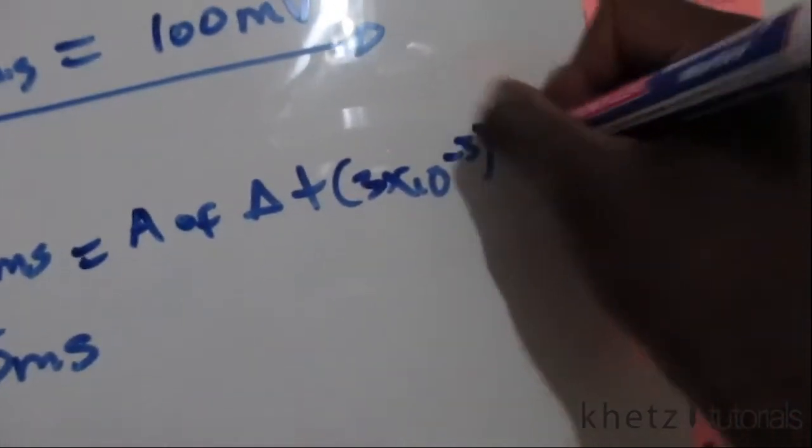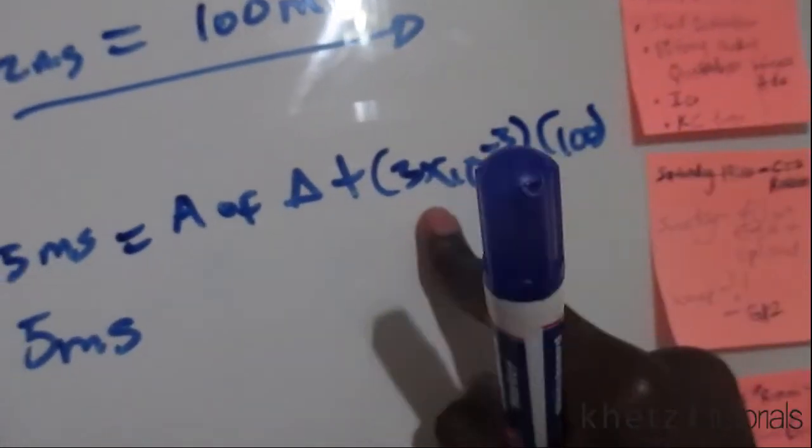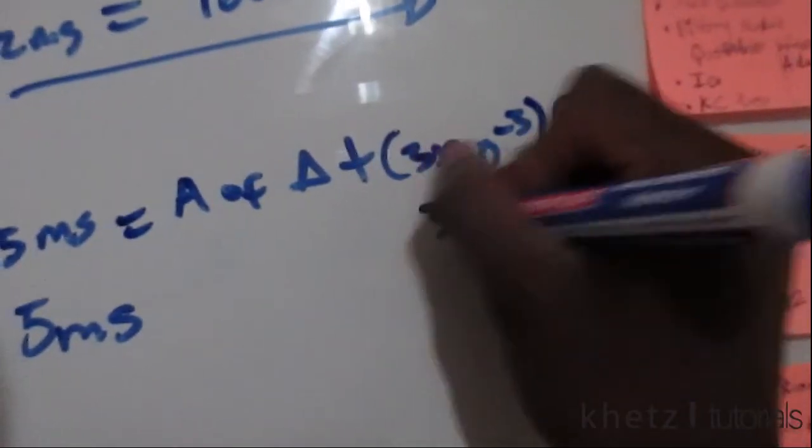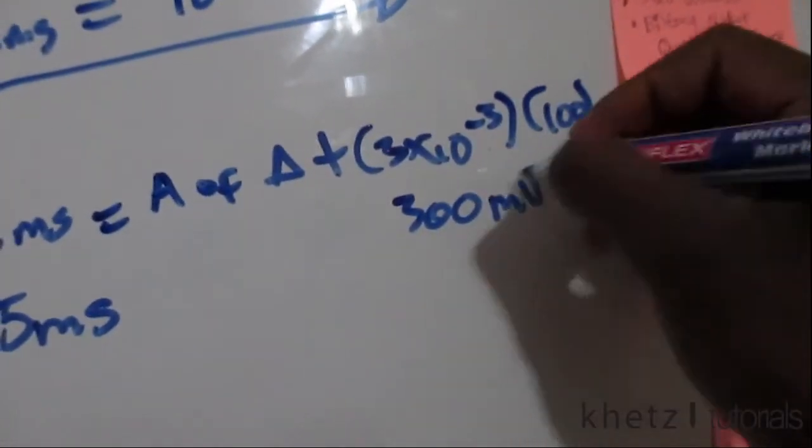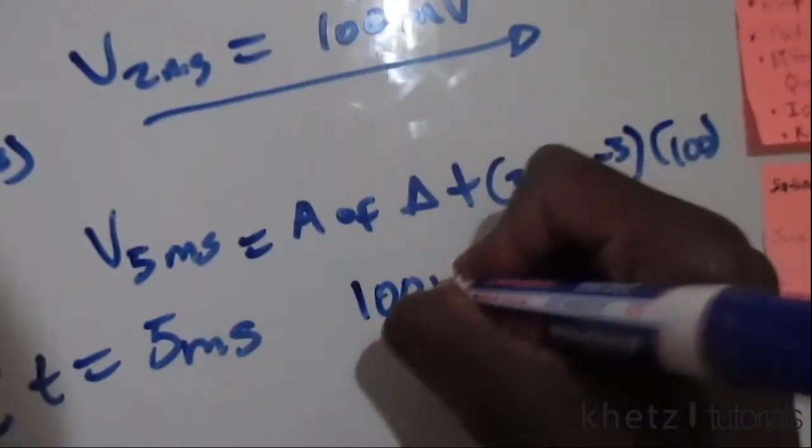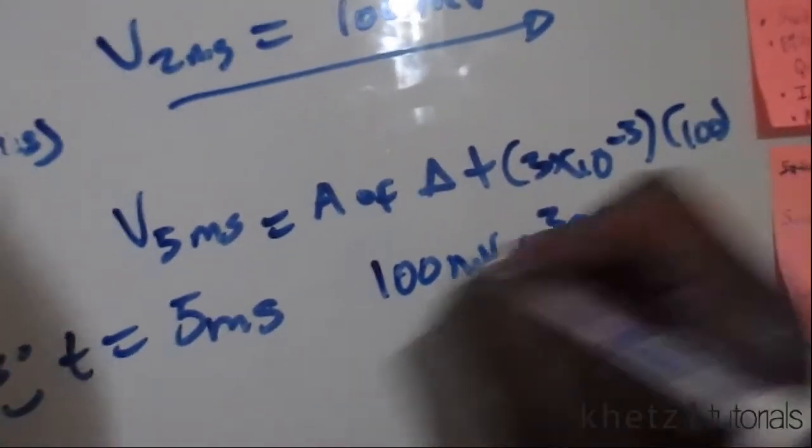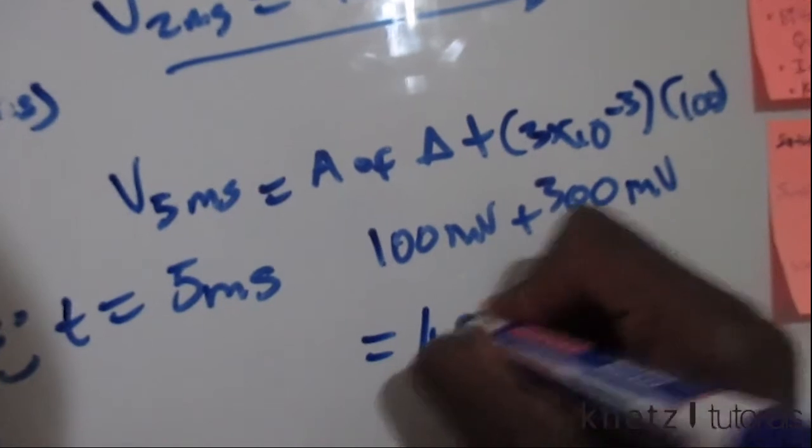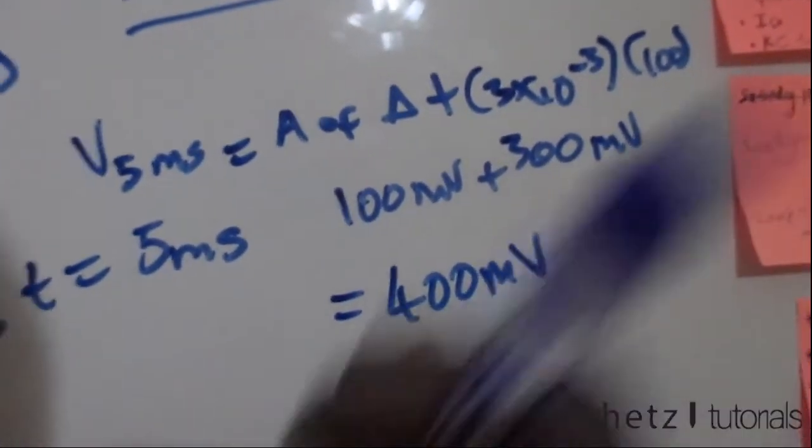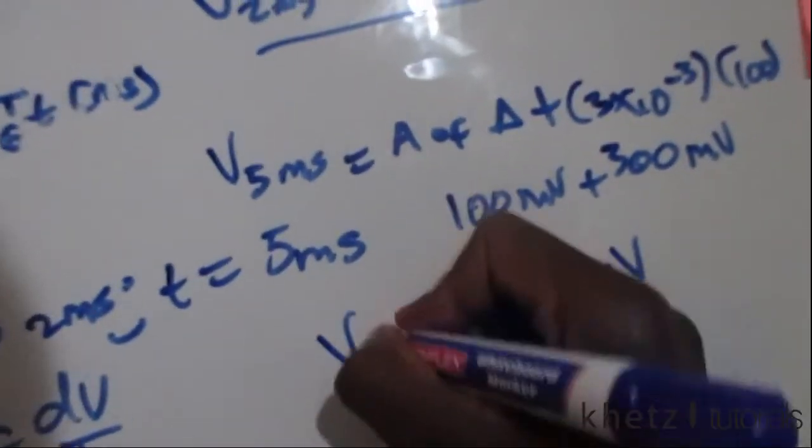And the previous answer was 100 millivolts. So 100 millivolts plus 300 millivolts is the total answer, or the final answer of 400 millivolts. So the voltage at five milliseconds is 400 millivolts.